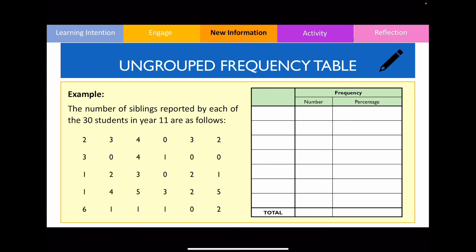In this example, notice that we're dealing with discrete data and the range of responses is quite limited. To build the table, we define the variable — in this case the number of siblings — and list all options down the column. The question states there are 30 responses in total, so the total is 30. Now we tally up the frequencies: students reporting 0 siblings is 6, students reporting 1 sibling is 7, and so on for the rest of the table.